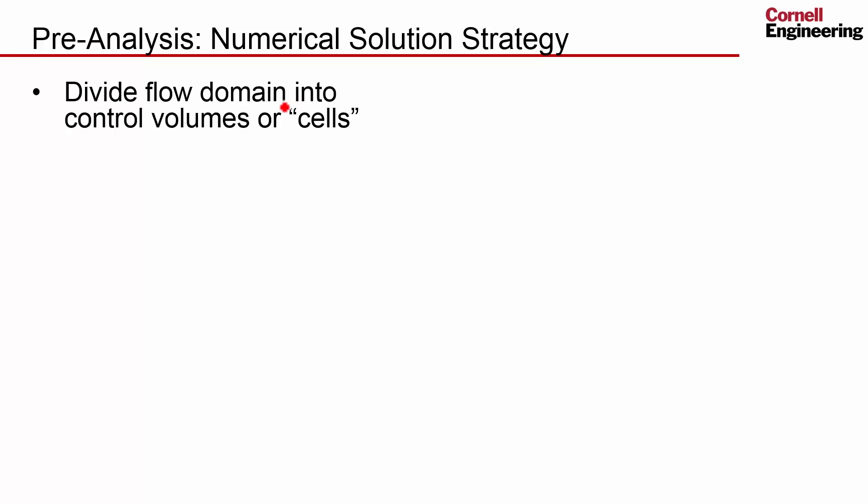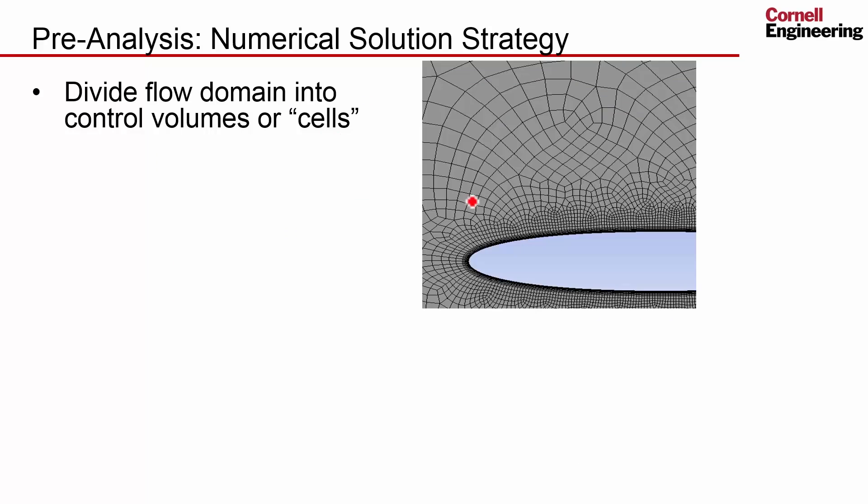We divide the flow domain into control volumes or cells. An example of that division via a mesh is shown over here, and we compute the values at the centers of the cells.